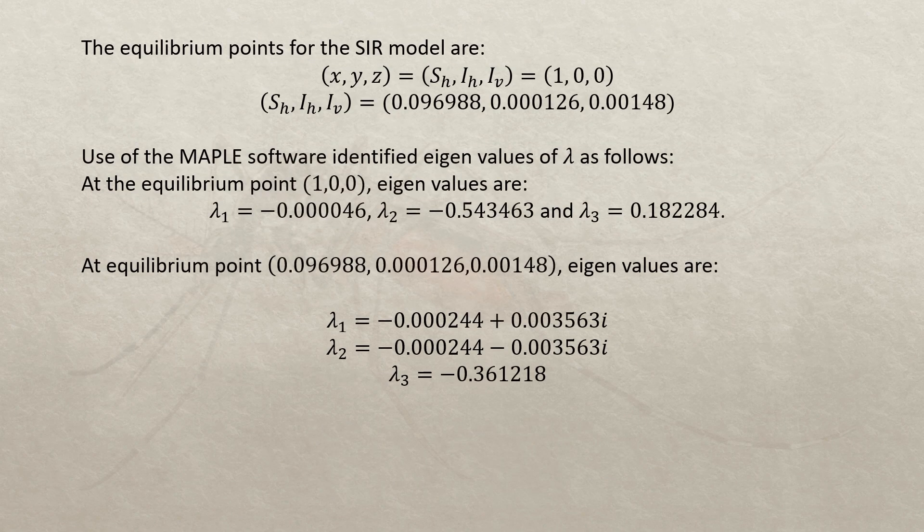The equilibrium points for the SIR model are (1, 0, 0) and the second endemic equilibrium point.